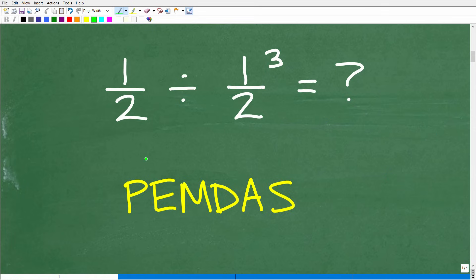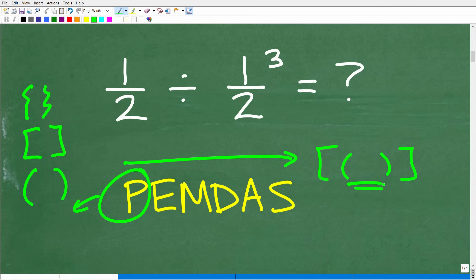Okay, so PEMDAS is a checklist. We go from left to right. And the first thing we're going to start with is this P. Now P stands for parentheses. So, if you see any parentheses in a math problem, you're going to start there. But it's not just parentheses. It could be these brackets or these kind of squiggly brackets. Really, technically, it's grouping symbols. So, if you have a problem with multiple parentheses and brackets, you always work for the innermost parentheses first. Then you kind of work your way out.